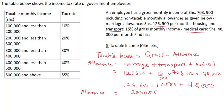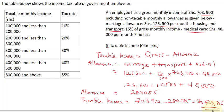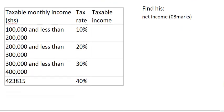Now we calculate taxable income. Taxable income equals gross minus allowance: 703,900 minus 280,085. This gives us 423,815. That is exactly how to calculate your taxable income.